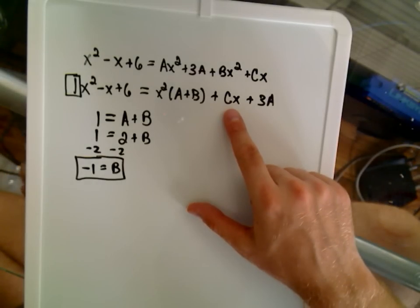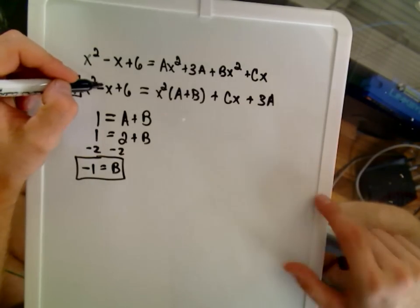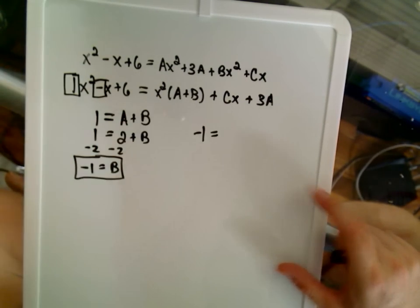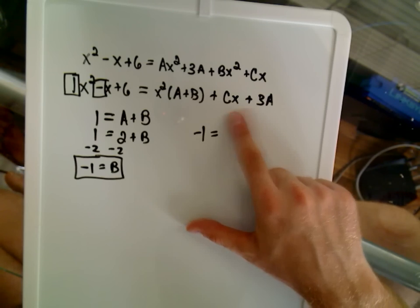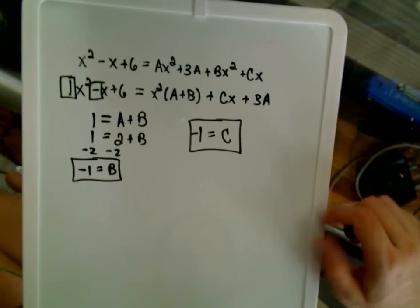Notice also, if we do the equating of the coefficients for the x term, notice there's a negative 1 on the left-hand side. Well, the only thing that has an x attached to it on the right-hand side is just C, so we'll also get that C equals negative 1.